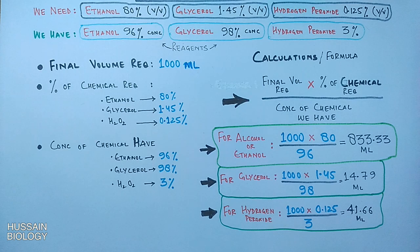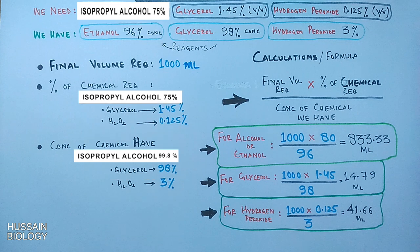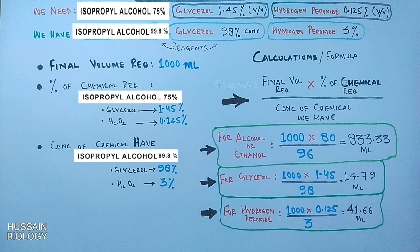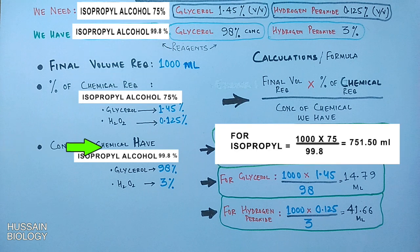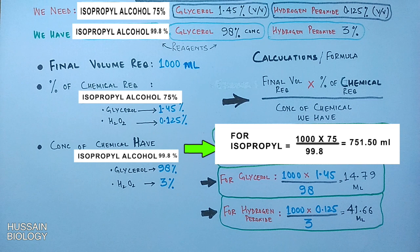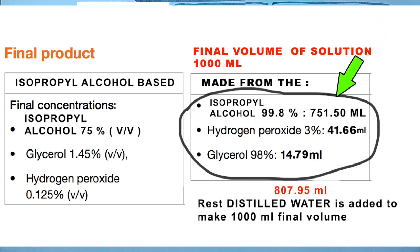For the isopropyl alcohol-based sanitizer, we replace ethanol with isopropyl alcohol. We need 75% isopropyl alcohol in the final solution; the rest of the chemicals remain the same as in the ethanol-based formulation. The available isopropyl alcohol is 99.8%. Applying the formula: 1000 × 75 ÷ 99.8, we get 751.50 ml of isopropyl alcohol needed.